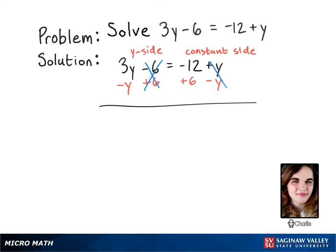So on the left, you have 3y minus y, which gives you a total of 2y. And on the right, you have negative 12 plus 6, which gives you a total of negative 6.